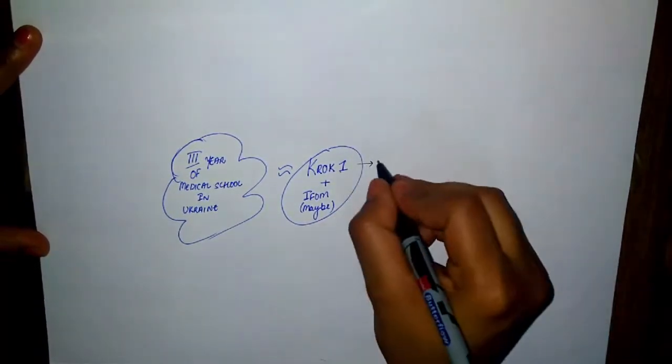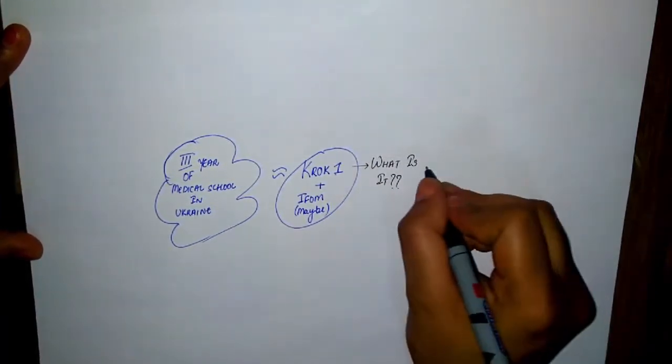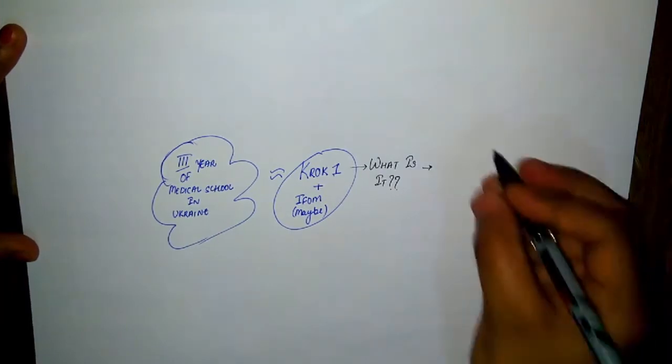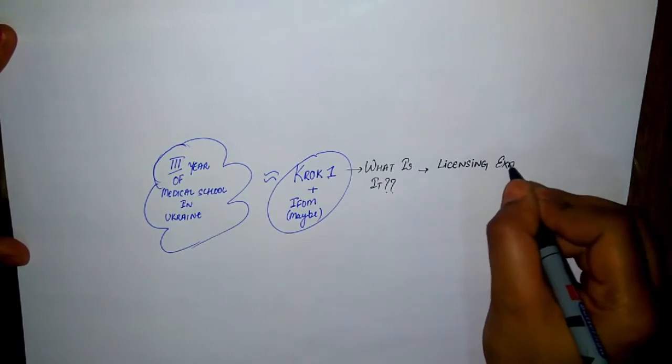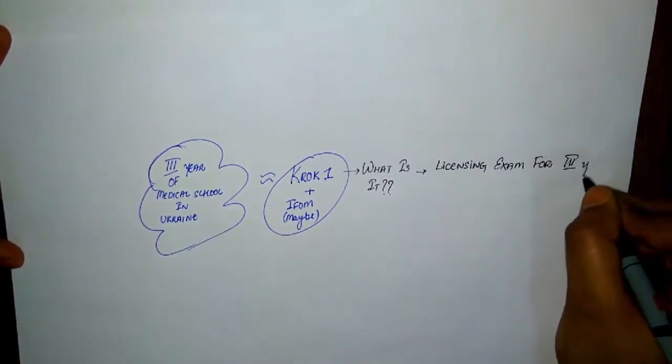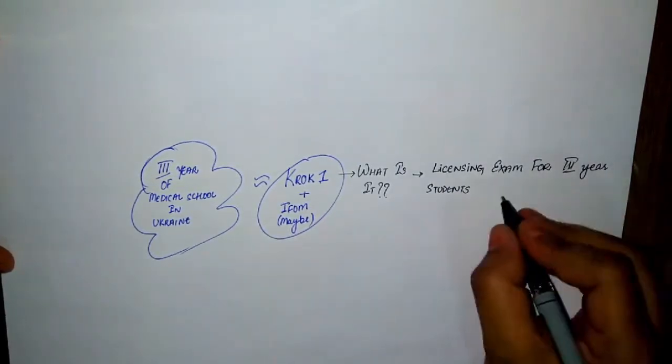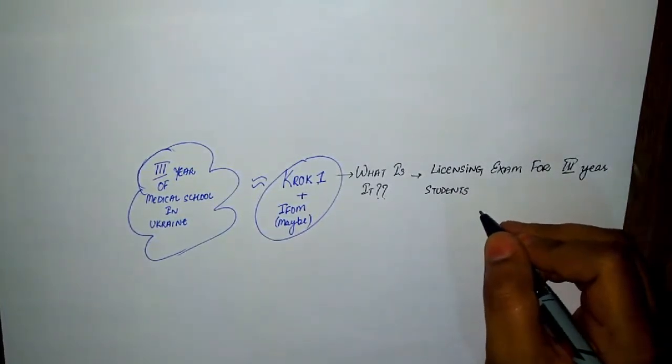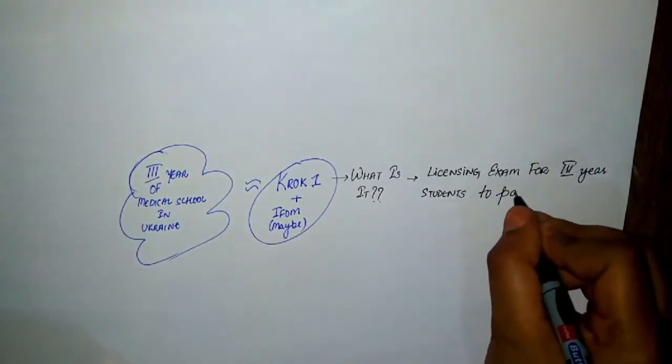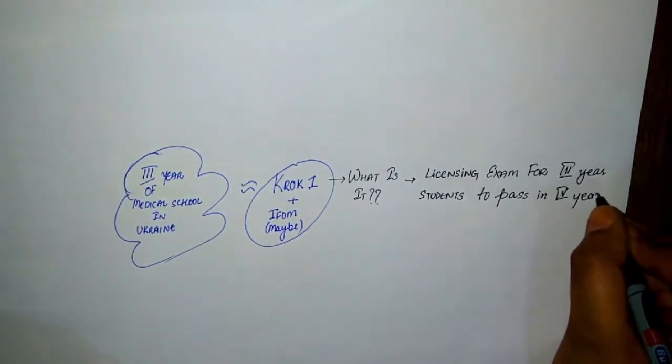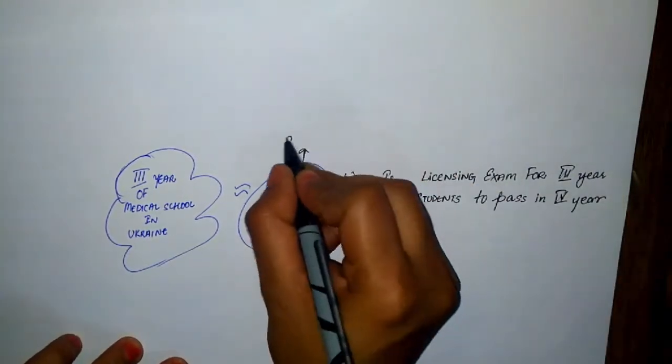What is CROC 1? It is a licensing examination required at the end of third year that tests your knowledge on preclinical subjects studied in first, second, and third year. CROC 1 is on a national level, meaning all students in Ukraine studying in third year give the examination on the same day.